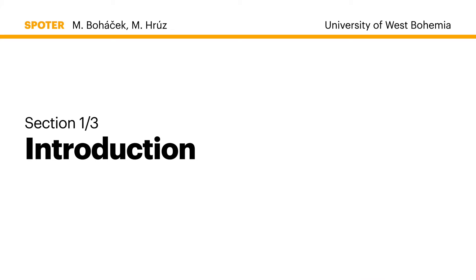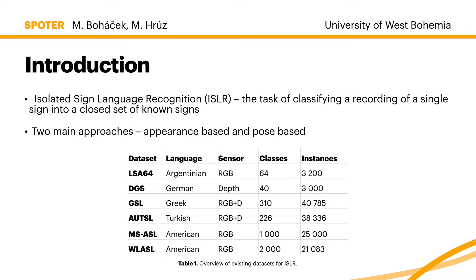Let's start with the introduction and define the actual problem we're trying to solve. The task of isolated sign language recognition, or ISLR for short, is the classifying of a recording or video of a single sign into a closed set of known signs or lemmas from the sign language. There are two main approaches within the literature currently: one focused on appearance-based methods or architectures, and the second one is pose-based.